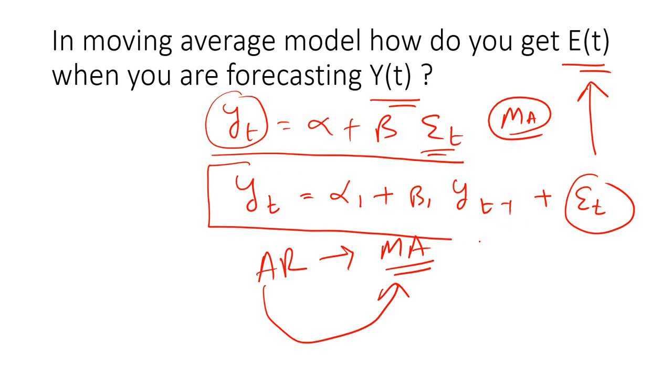So when you take this form of the equation, when you regress Y(t) with respect to Y(t-1), you get E(t). So we get E(t) from this equation. So before you plug in the error term in the MA series, you actually get the error terms from this particular equation, which is an AR model.